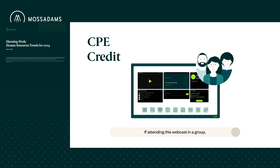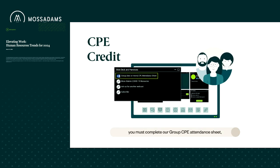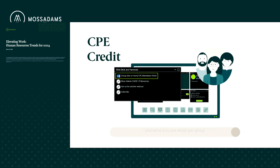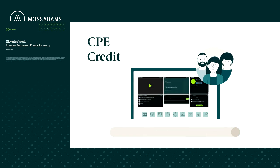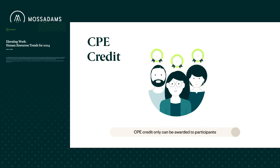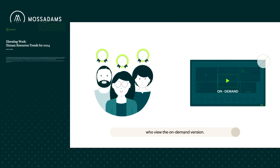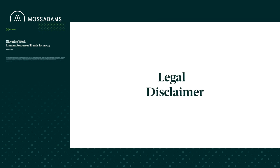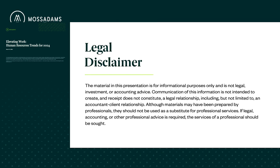If attending this webcast in a group, you must complete our group CPE attendance sheet, available in our slide deck and handouts widget, to receive credit. Please have all group members sign it and send only one sheet per group. CPE credit can only be awarded to participants registered as themselves and isn't available for participants who view the on-demand version. This presentation is not legal, investment, or accounting advice. We encourage you to seek the counsel of a professional service provider to apply this content to your specific circumstances.